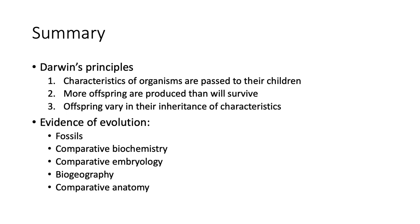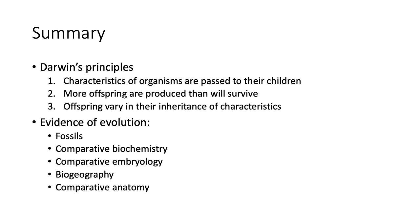That's pretty much it for this lecture's content. Now I'll be reviewing everything we've gone over in this lecture so far. First of all, Darwin's three principles were that characteristics of an organism are passed on to their children, more offspring are produced than can survive, and that offspring vary in their inheritance of these characteristics. I also went over the huge array of evidence for evolution, which included fossils, biochemistry, embryology, biogeography, and comparative anatomy. Additionally, a species is a group of individuals that can reproduce and make fertile offspring, while speciation is the formation of a new species. And there are three types of selection, pictured with these three graphs to the right here, and they are directional, diversifying, and stabilizing, respectively. Finally, there are four key patterns of evolution, and these are divergent evolution, convergent evolution, parallel evolution, and coevolution.